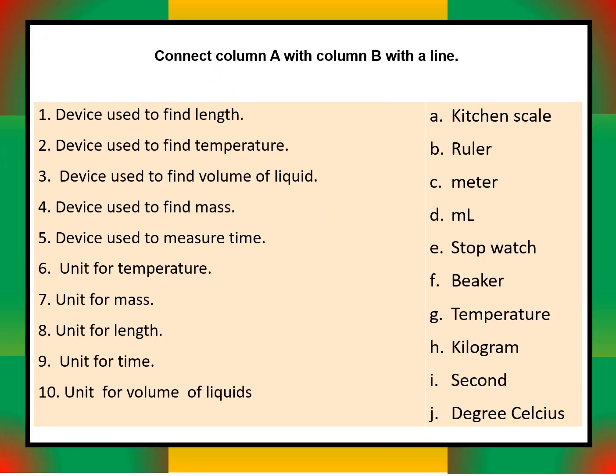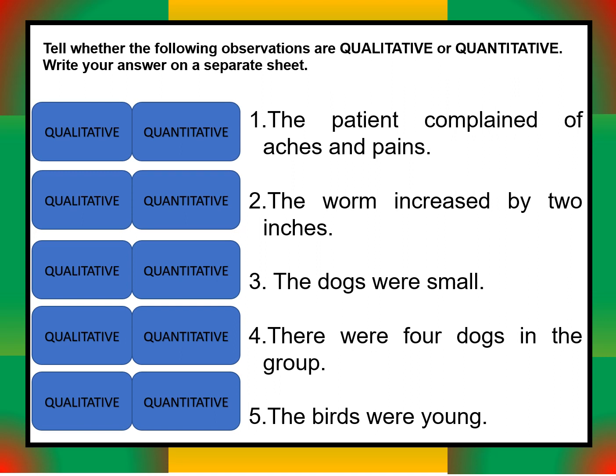In the matching activity, copy column A and column B on a piece of paper and connect them with a line. For example, match the device used to find length with its correct answer. Also, tell whether the following observations are qualitative or quantitative: 'the patient complains of aches and pains' and 'the worm increased by two inches.'